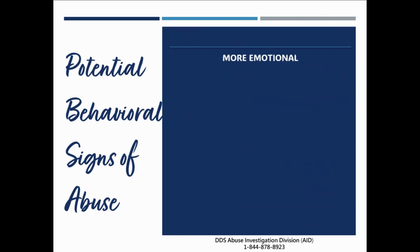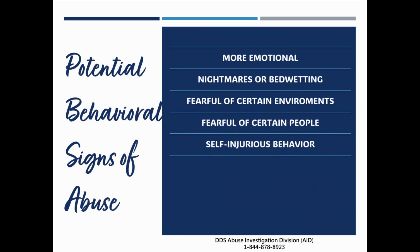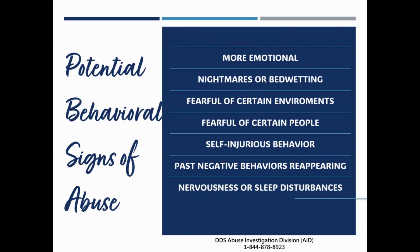When evaluating if someone has been abused, it is important to consider behavioral changes in addition to physical signs. Some examples of potential behavioral signs are becoming more emotional, nightmares and bedwetting, fearful of certain environments or certain people, and self-injurious behavior. If this is a change from their baseline, self-injurious behavior could also be a potential physical sign as well. There could be crossover amongst behavioral and physical signs. Other signs include past negative behaviors reappearing, nervousness, sleep disturbances, and any other changes in behavior that do not align with their baseline.